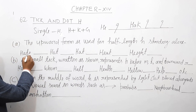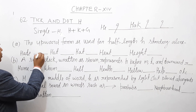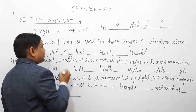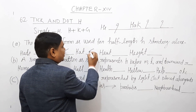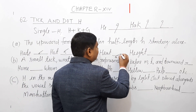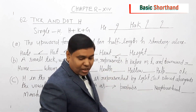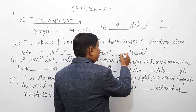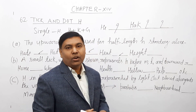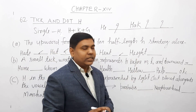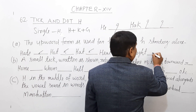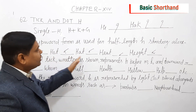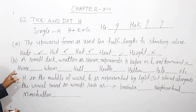जैसे कि यहाँ पे 'Hit' लिखा हुआ है — T का sound है, तो आपको upward बनाना है, ऐसे Hit। 'Hot', 'Hat', 'Heat' — सब half length में बनाना है। जब भी half length होता है, through the line नहीं लिखते हैं, इसको on the line लिखते हैं, क्योंकि यह already half length में बना हुआ है। 'Height' above the line होगा और I का diphthong लग जाएगा। यह पहला point था — generally हम half length लिखते हैं।